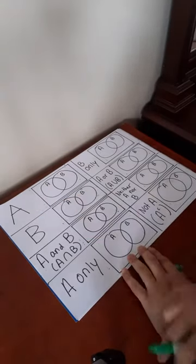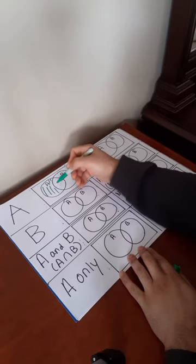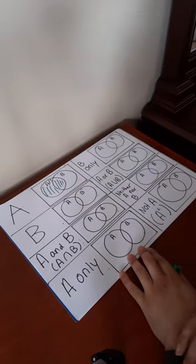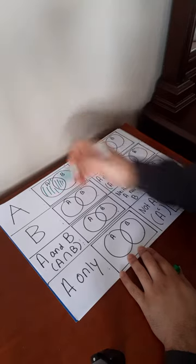The first one, A. So what that means is everything in just A and the intersection. The whole compound, the whole circle.